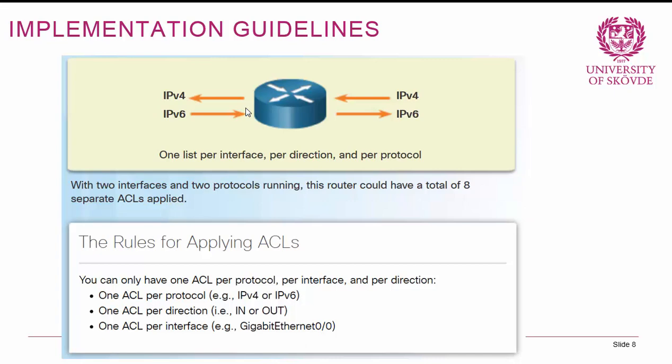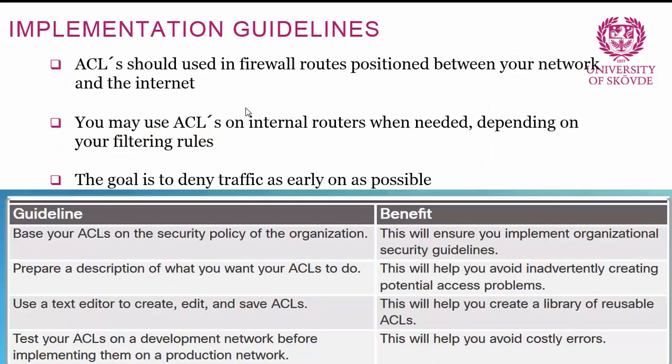ACLs should be used in firewalls positioned between your network and the internet. You may have ACLs on internal routers when needed, but the overall goal is to deny traffic as early as possible — if there is traffic that should not reach its destination, you should remove it from your network as early as possible, primarily for performance reasons.